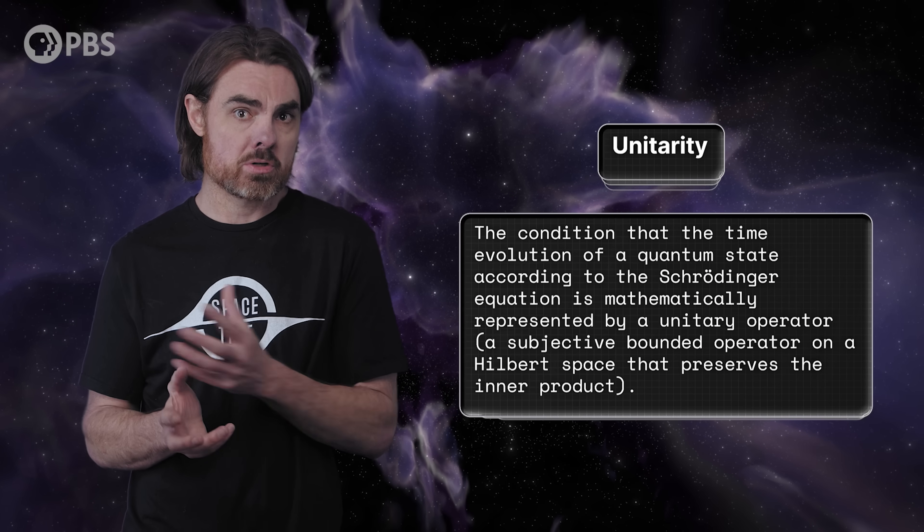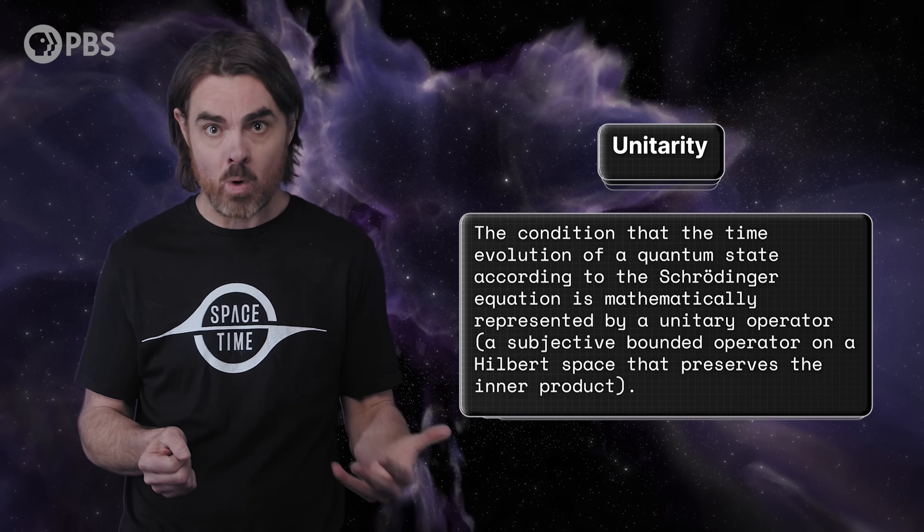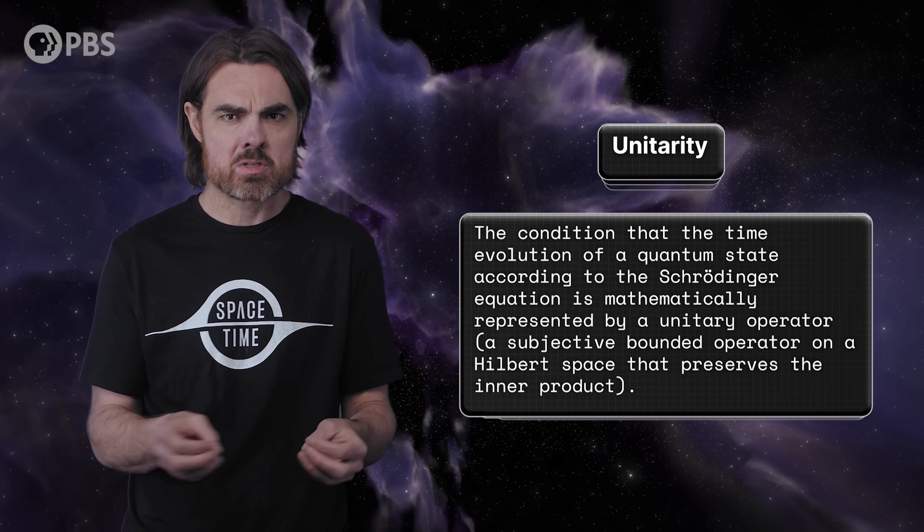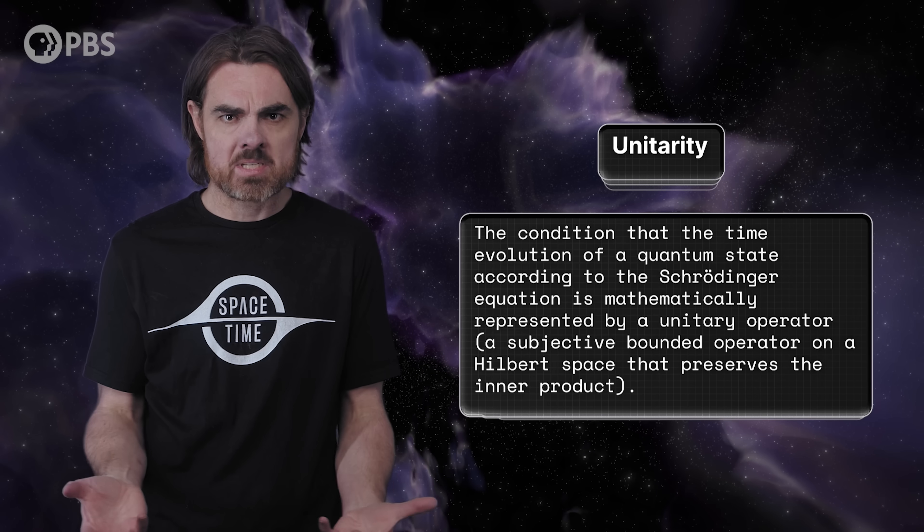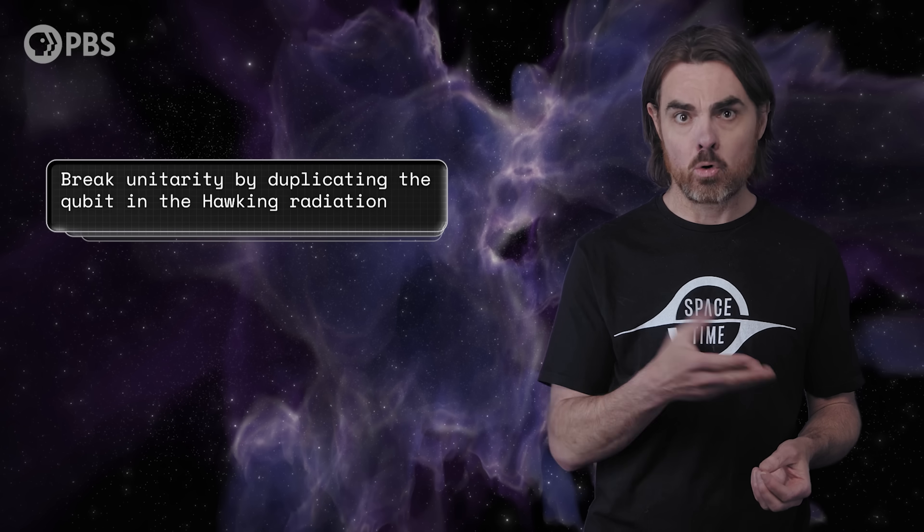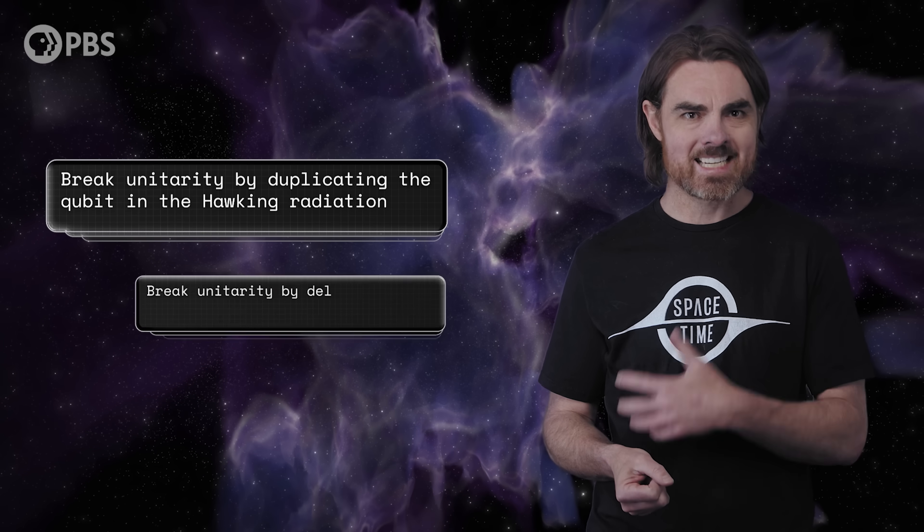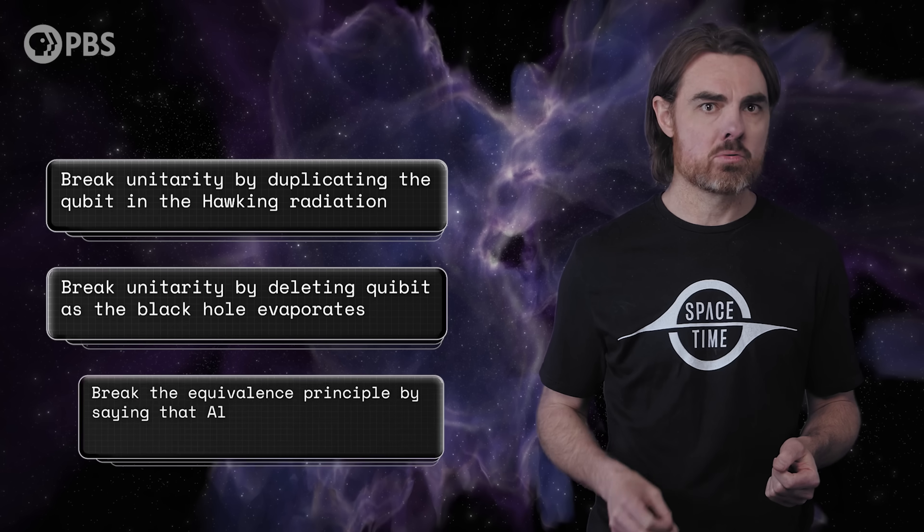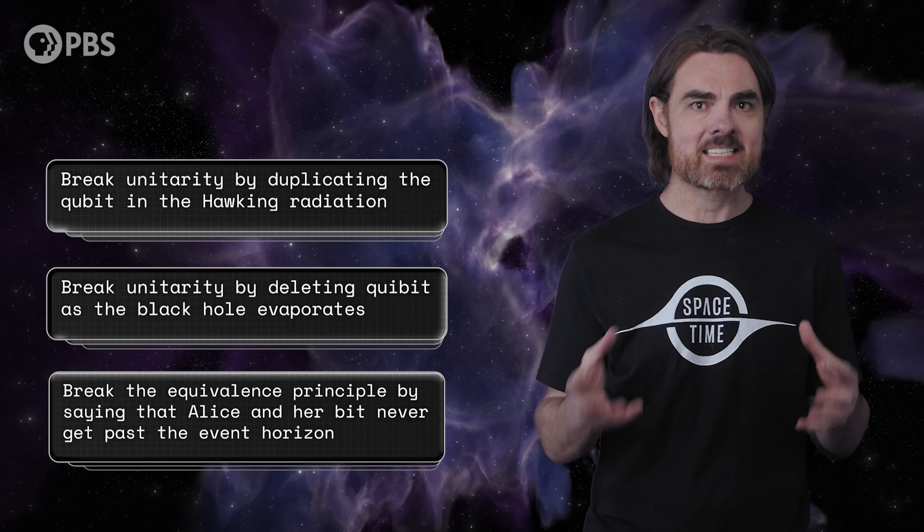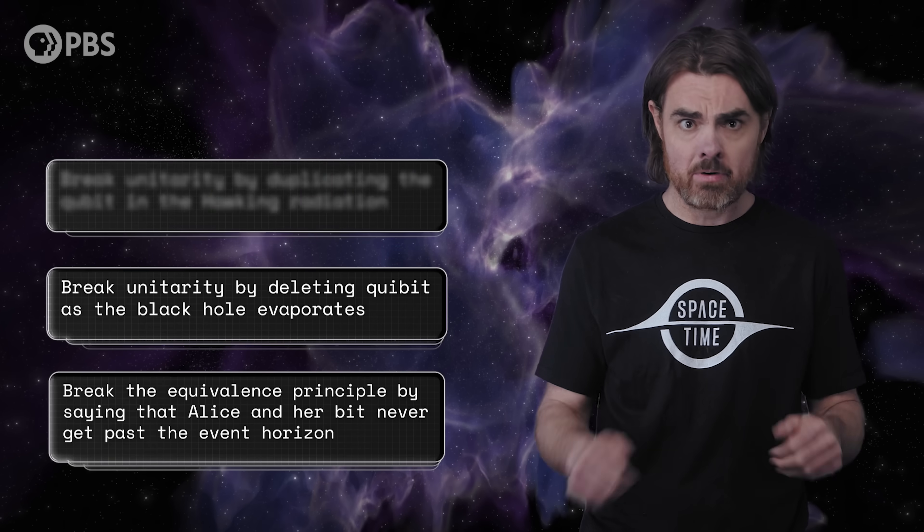The quantum wave function describes probabilities. Probabilities have to add up to one. Add up all the probabilities of, say, an object's possible position, and they can't add up to more than 100%, because what would that even mean? Deleting or duplicating a qubit breaks unitarity, and so is a no-no. But it seems we have to either break unitarity by duplicating the qubit in the Hawking radiation, or by deleting it as the black hole evaporates. Or we have to break the equivalence principle by saying that Alice and her bit never got past the event horizon.